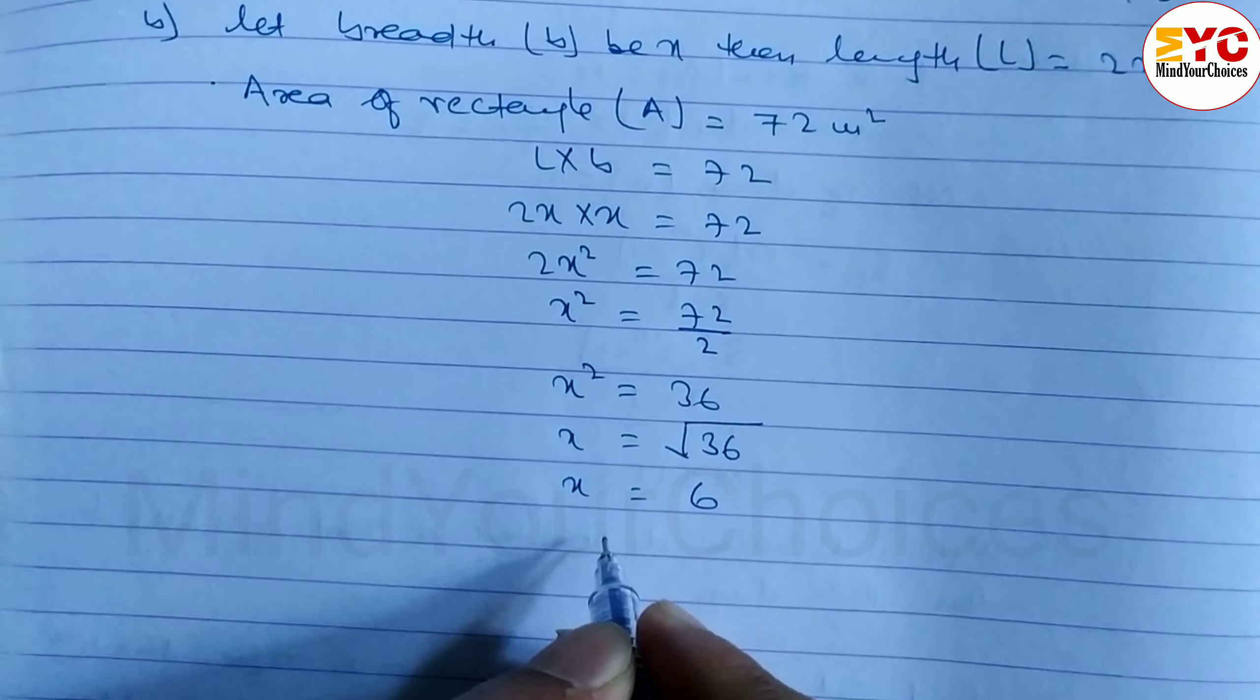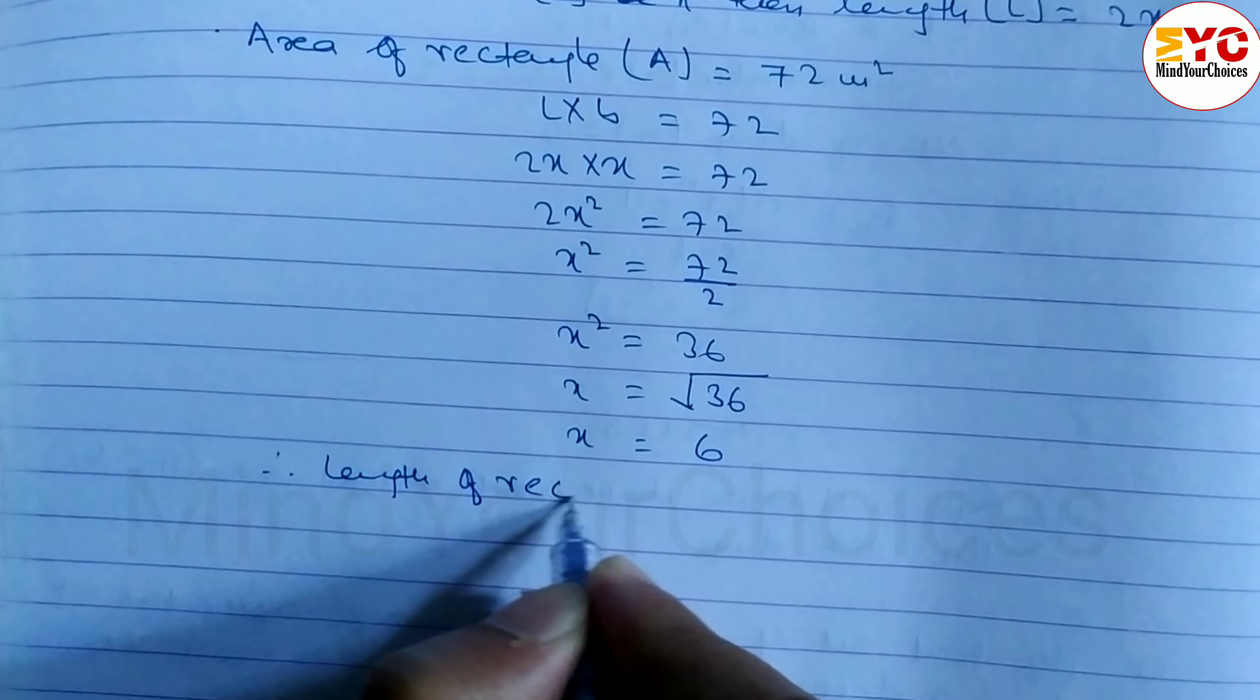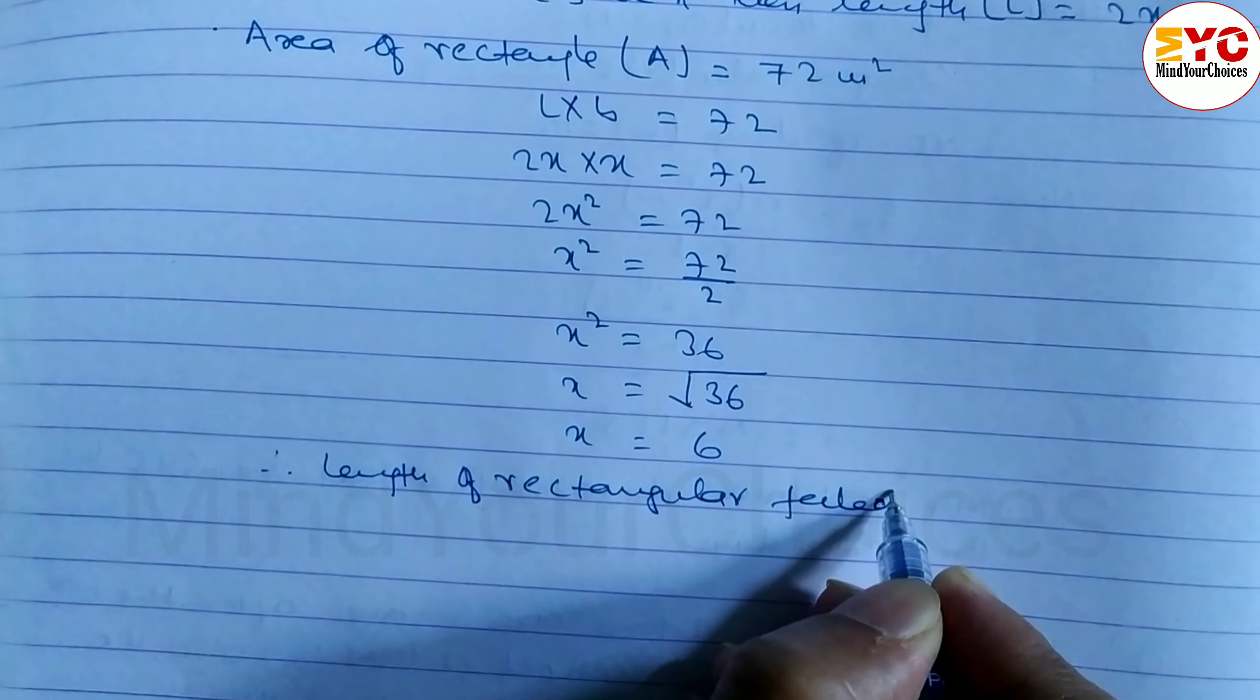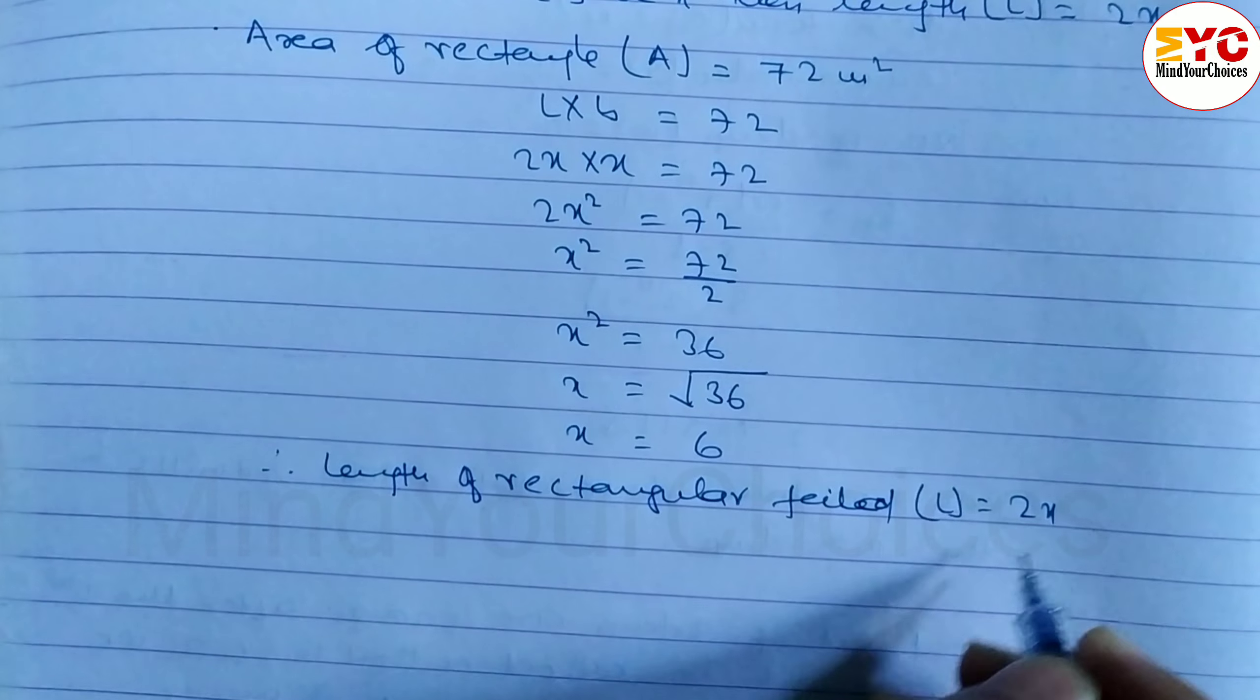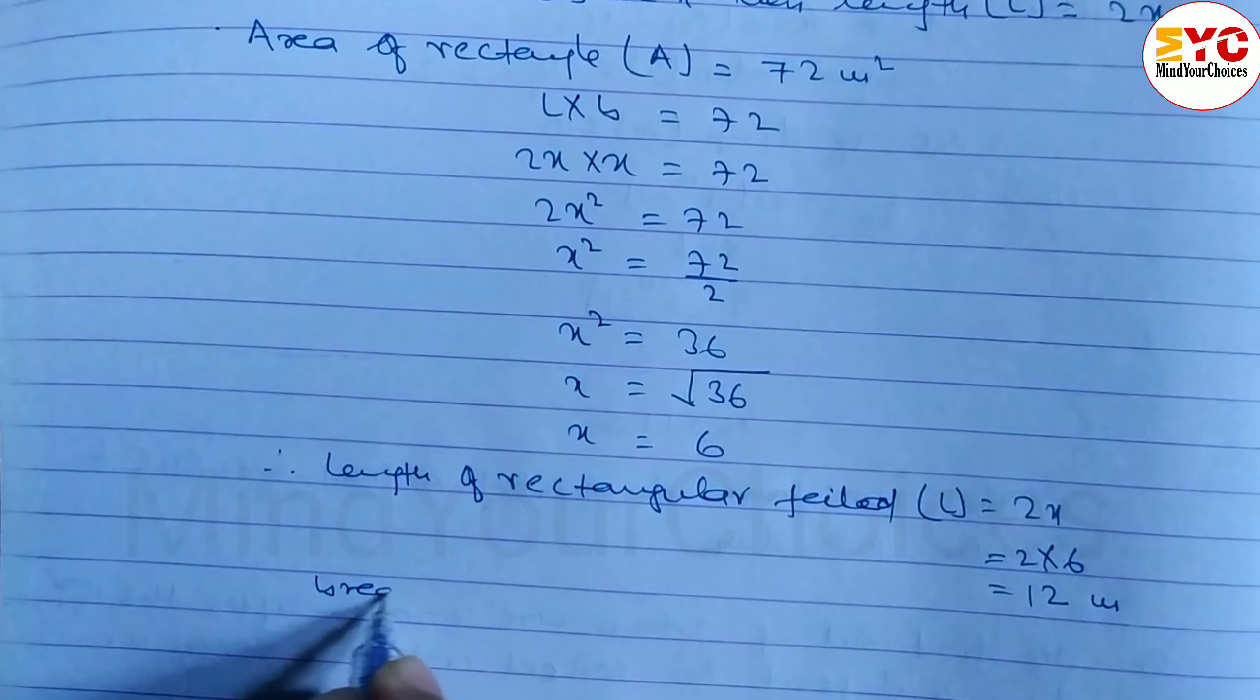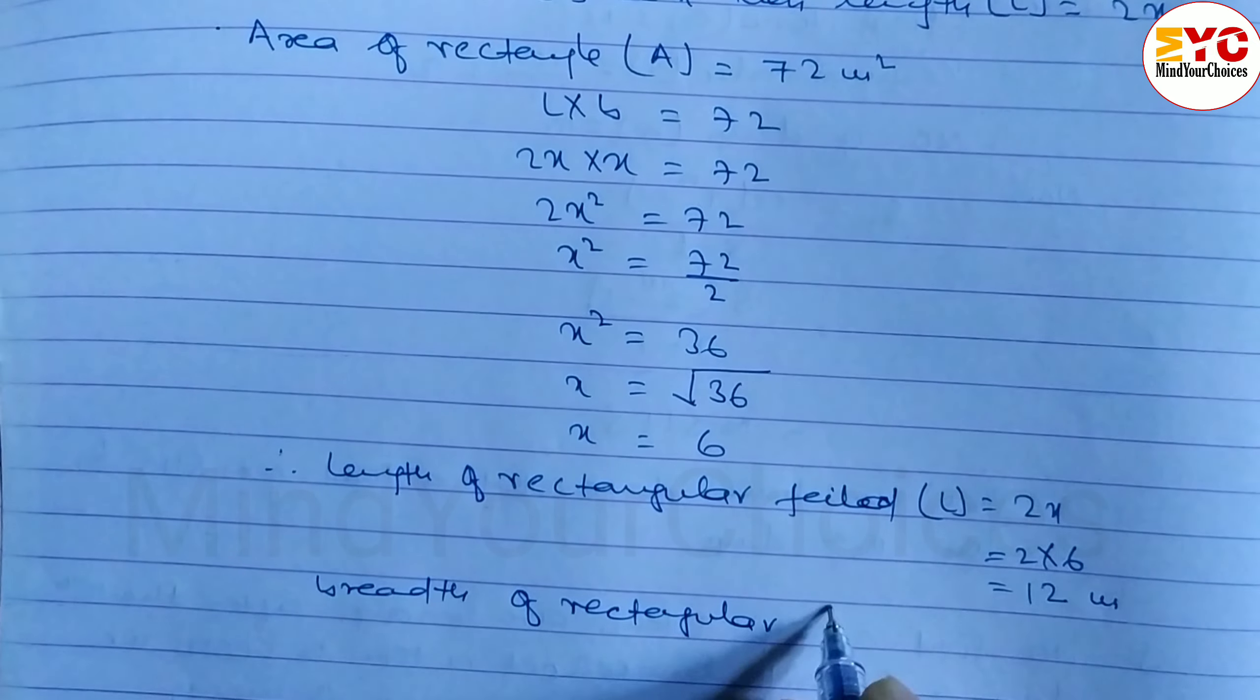Therefore, length of rectangular field L is equal to 2x, so 2 into 6 is equal to 12 meter.